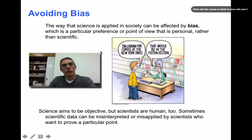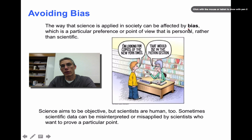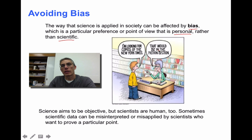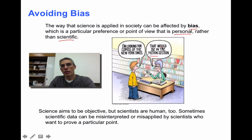The last thing we're going to look at in this screencast is the idea of bias. Unfortunately, sometimes people are intentionally biased, but sometimes we're biased without even realizing it. The way that science is applied in society can be affected by bias — a particular preference or point of view that is personal rather than scientific. For example, the joke here shows someone looking for the New York Times in the fiction section — that person doesn't believe what she reads there is legitimate. That is her bias. Science aims to be objective, but scientists are human too, and sometimes scientific data can be misinterpreted or misapplied by scientists who want to prove a particular point.